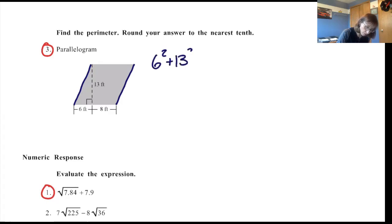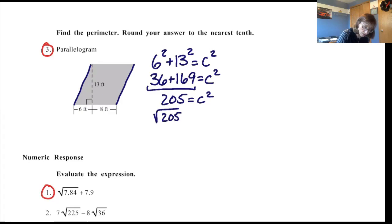So we're going to set up our Pythagorean Theorem. 6² + 13² = c². And so I know that that is just going to give me 36 + 169, and that equals c². Well these two numbers added together give me 205, which is c², so now I know the square root of 205 is c.